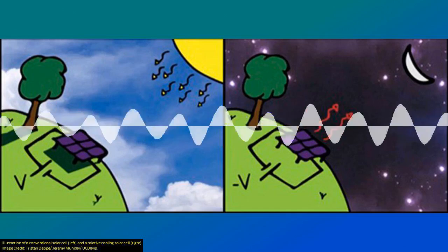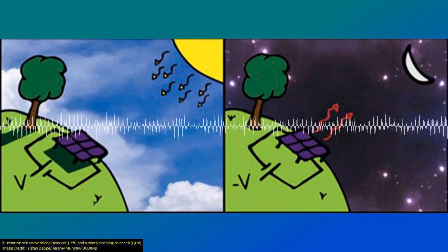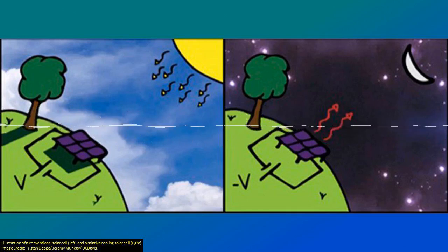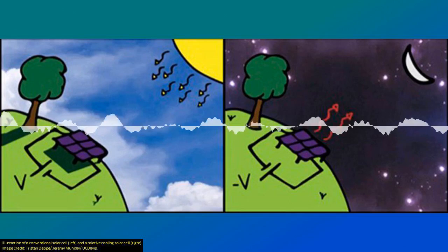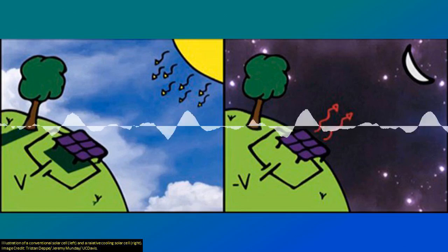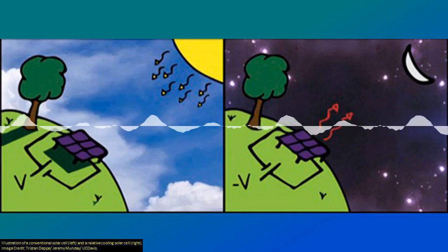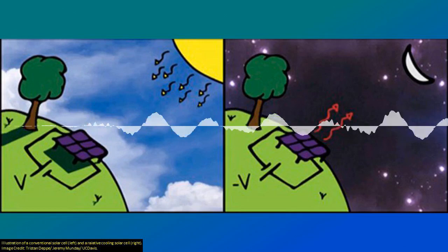Using a different type of cell, they've been able to build these solar cells that generate about a quarter of the energy by radiating back into space, a quarter of the energy of their comparable solar cells during the day. Considering it's a first prototype, to already generate a quarter of the amount of energy is huge.